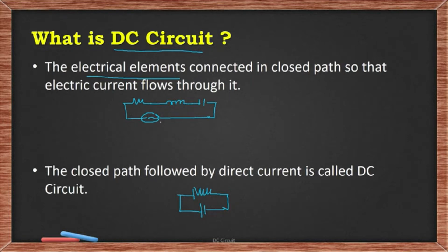This is an AC circuit because the closed path is followed by AC, and this is a DC circuit because the closed path follows direct current.